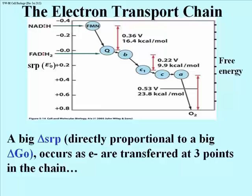The graph in this slide plots the free energy and standard reduction potential of the electron system components, highlighting the fact that free energy and the standard reduction potential are directly proportional, and showing that there are three redox reactions with large drops in free energy.